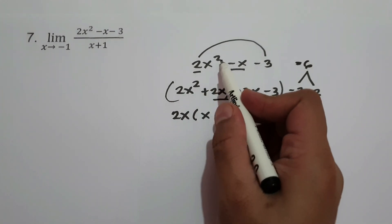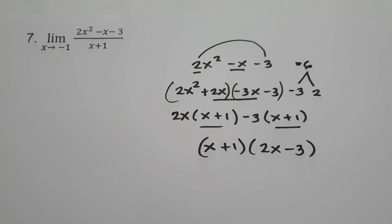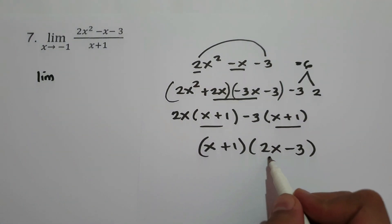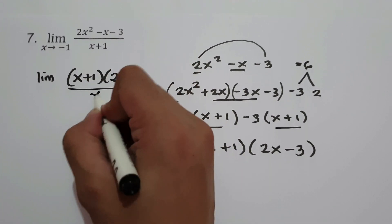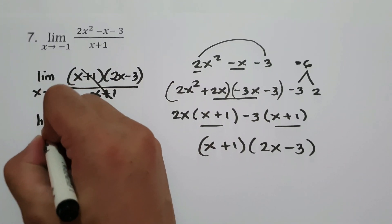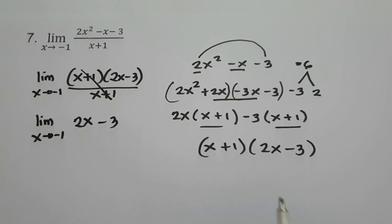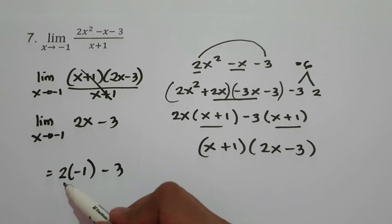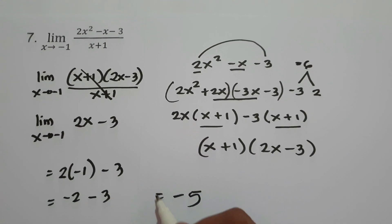So the factors of 2x squared minus x minus 3 are x plus 1 and 2x minus 3. We have the limit of x plus 1 times 2x minus 3 all over x plus 1 as x approaches negative 1. Canceling x plus 1, we get the limit of 2x minus 3 as x approaches negative 1. Substituting x equals negative 1: 2 times negative 1 minus 3 equals negative 2 minus 3, which is negative 5. So our answer is negative 5.